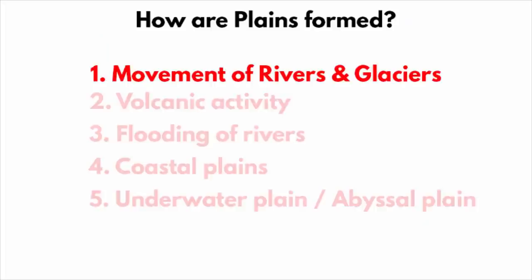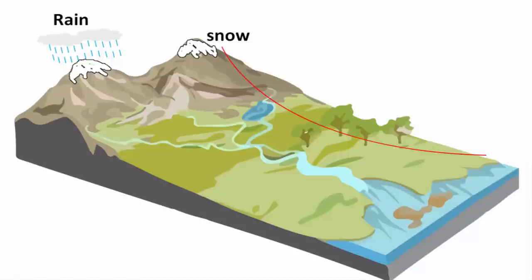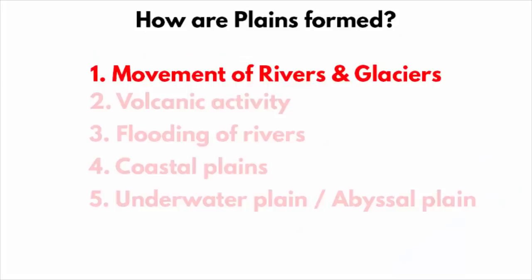When ice and water flow from higher elevation landforms, they erode the landscape. Water and ice carry dirt, rock and sediments from higher elevation landforms to lower. As layers upon layers of sediments are laid down, plains are formed.